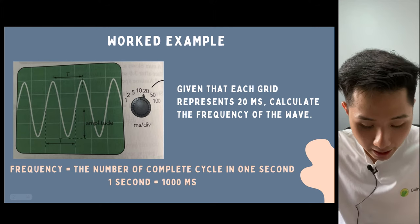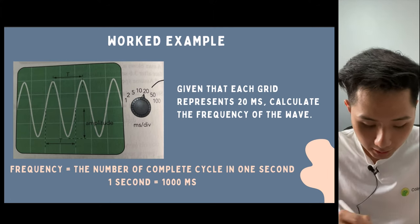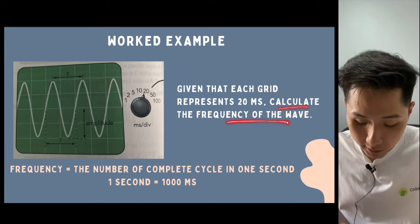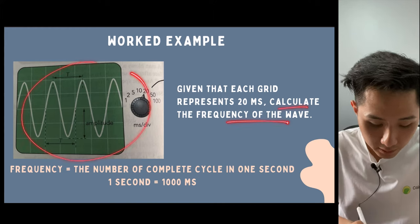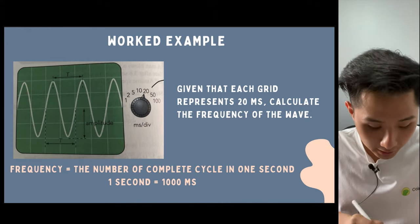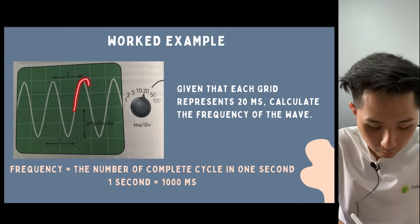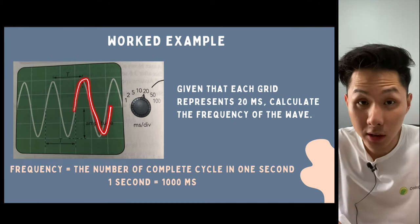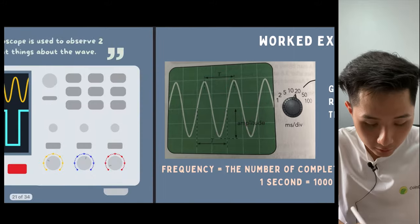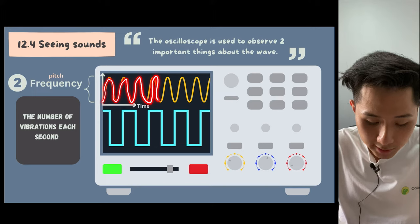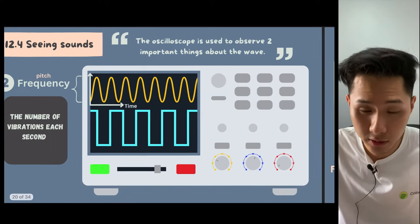Here I have another example. Given that each grid represents 20 milliseconds, calculate the frequency of the wave here. Here's a formal definition of frequency. Frequency is the number of complete cycles in just one second. If we look back to the graph here, if in one second it creates more complete cycles, it means it has a high frequency.